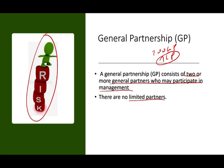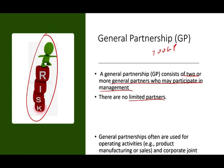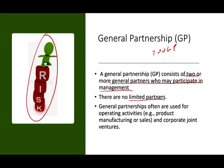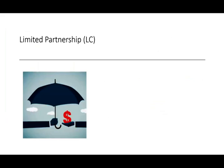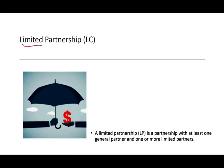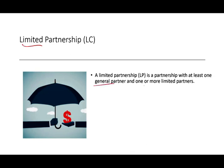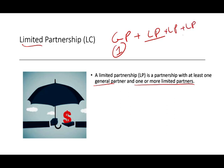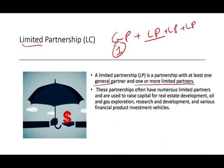General partnerships are often used for operating activities and corporate joint ventures. A limited partnership is a partnership with at least one general partner and one or more limited partners. You need a general partner for someone to take on the full risk, but a limited partnership also requires at least one limited partner. These partnerships often have numerous limited partners and are used to raise capital for real estate development, oil and gas exploration, R&D, and various financial investment vehicles.